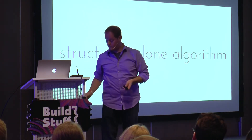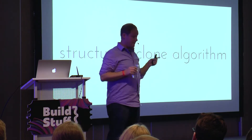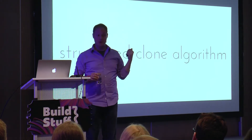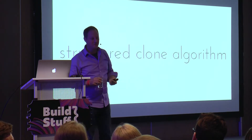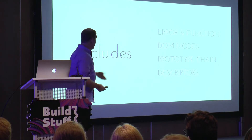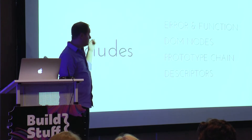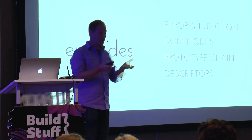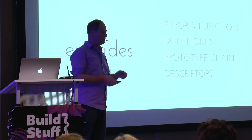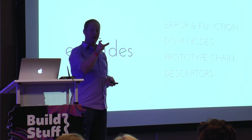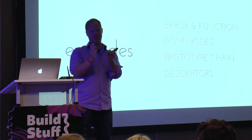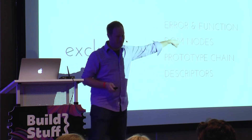The structured clone algorithm keeps track of mapping when a property has already been cloned, so self-referencing or cyclical references are okay. However, there are limitations: it will not clone a DOM node or an error/function object — you'll get a data clone error. It also doesn't go up the prototype chain, and it doesn't clone property descriptors themselves. So if you have an enumerable or writable descriptor on a property, that descriptor doesn't make it into the worker.